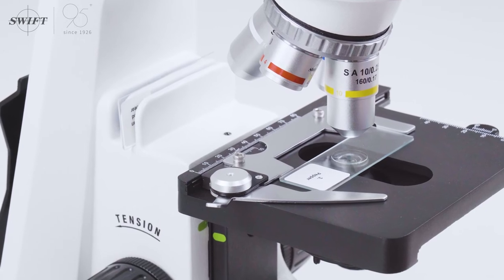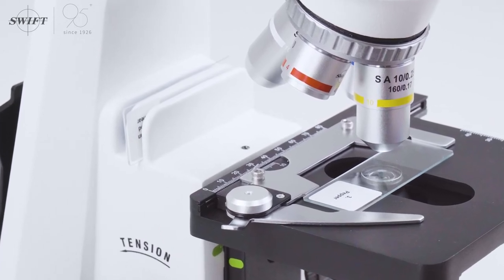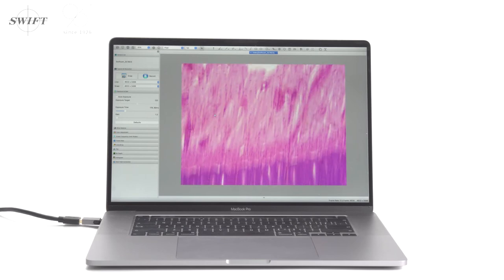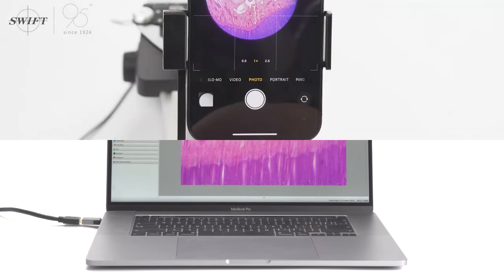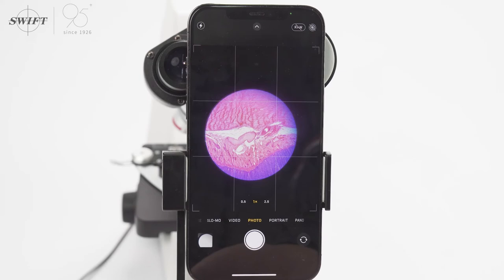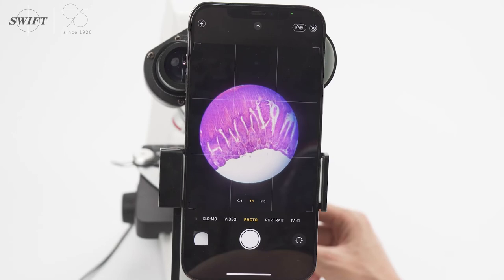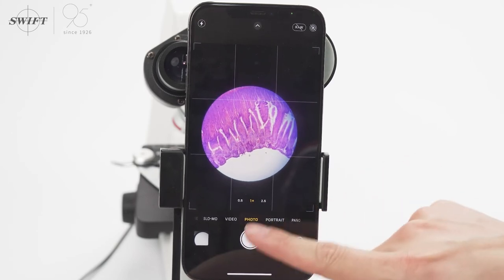The observation method is the same as the above steps. When you need to take images under the microscope, you can choose a variety of methods, such as connecting to mobile phones, electronic eyepieces, professional digital cameras, or using mobile phone brackets to take pictures or videos.